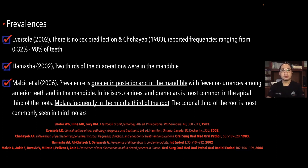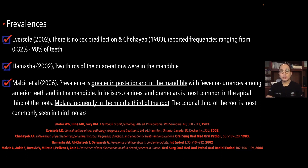Later, in 2002, Hamashya mentioned that two-thirds of dilacerations were in the mandible. This was also reinforced by Malchik in 2006, who stated that the prevalence is greater in the posterior and in the mandible, with fewer occurrences among the anterior teeth. These dilacerations typically happen in the middle and coronal third of the root, and are most commonly seen in the third molars.